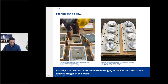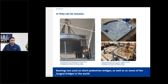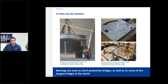Bearings come in all shapes and sizes. On the left are disc bearings for Hudson Rail Yards in New York at just 60 pounds, and on the right are spherical bearings for a California bus terminal at roughly 100 pounds. But they can also be massive — the pot bearings for the Hong Kong Convention Center are over 30,000 pounds each with a load capacity of 47,000 kips. Even bigger are spherical bearings for a bridge in Vietnam, each with a 56,000-kip capacity and almost 38,000 pounds weight.